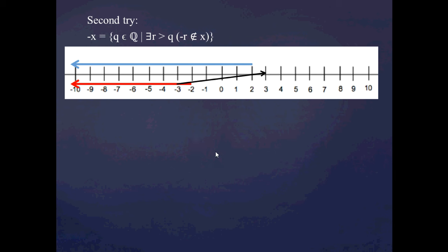Here's my second try at defining negative x. I'm going to define it as all rational numbers q such that there exists another rational number r greater than q such that the negation of r — not necessarily the negation of q, but the negation of r — is not in x. For example, to justify why negative four belongs to negative x, I'd say there's another number, say negative three, such that its negation three is not in the blue cut. This prevents greatest elements because for negative two there's no r greater than it whose negation is not in x. So this is really the definition that's going to work for us.